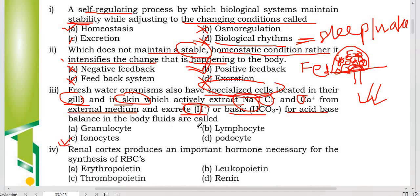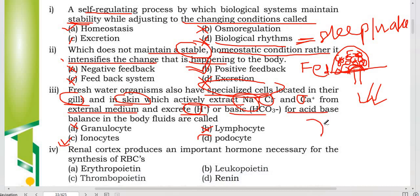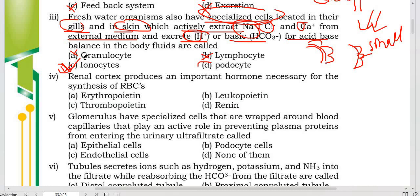Granulocytes and lymphocytes are different — they work in your body's immune system. Podocytes are the specialized cells wrapped around the glomerulus capillaries: they have small gaps that allow small particles through but block large proteins. So podocytes are different from ionocytes. The correct answer here is ionocytes — the special cells that absorb sodium and other ions.